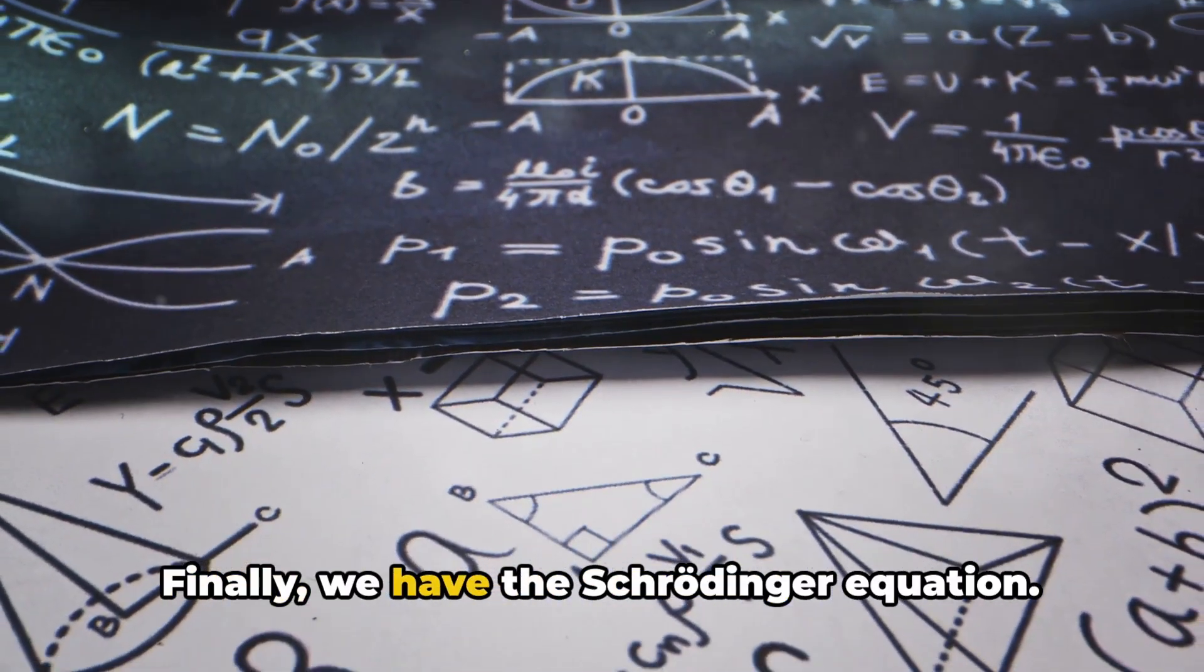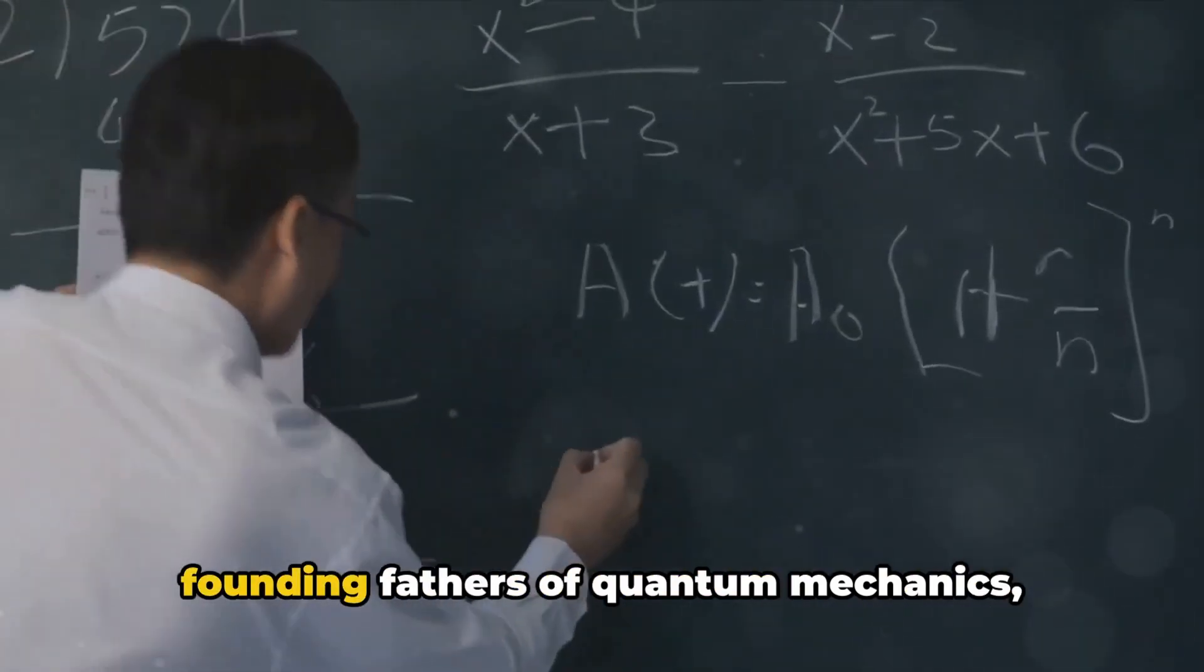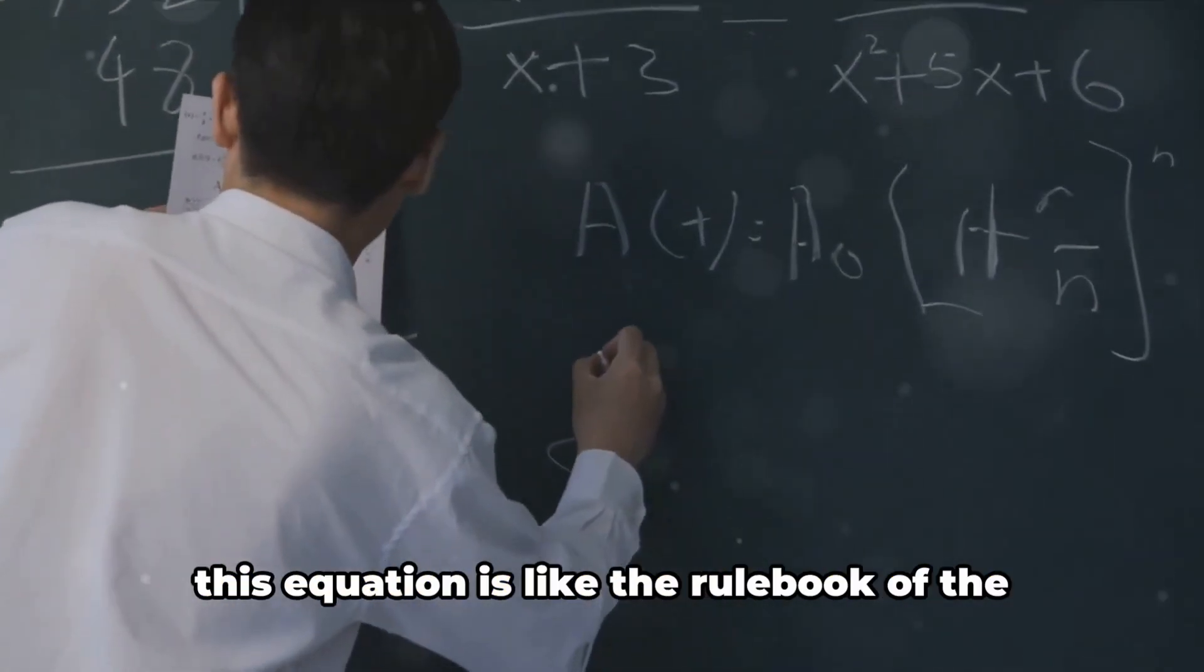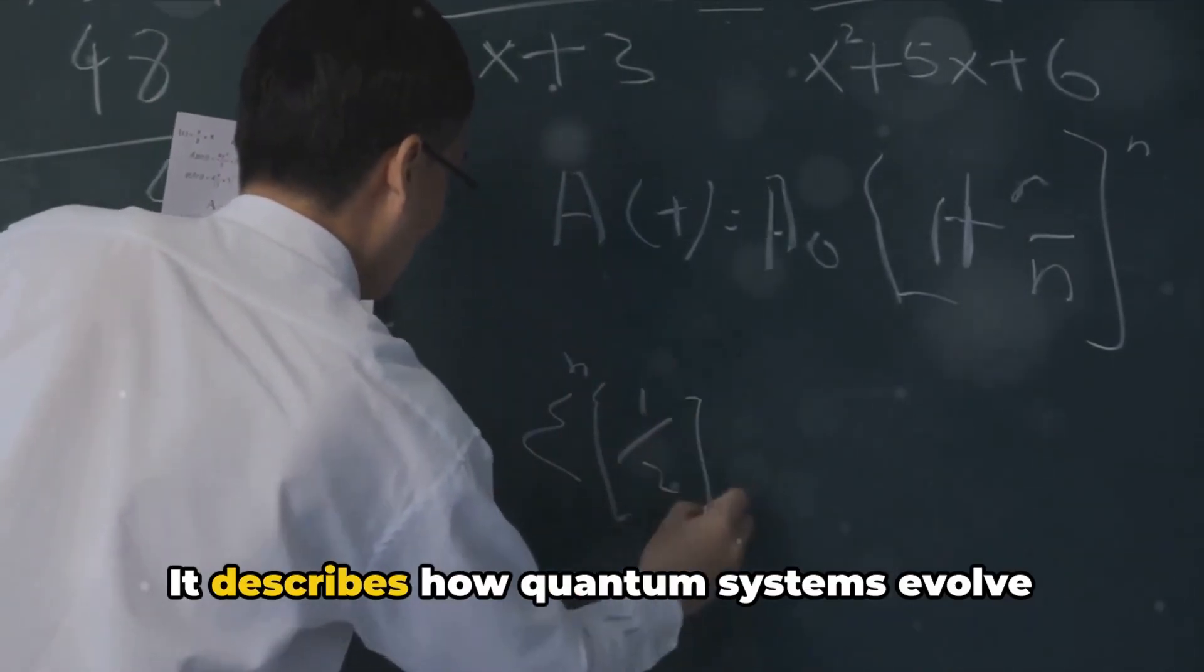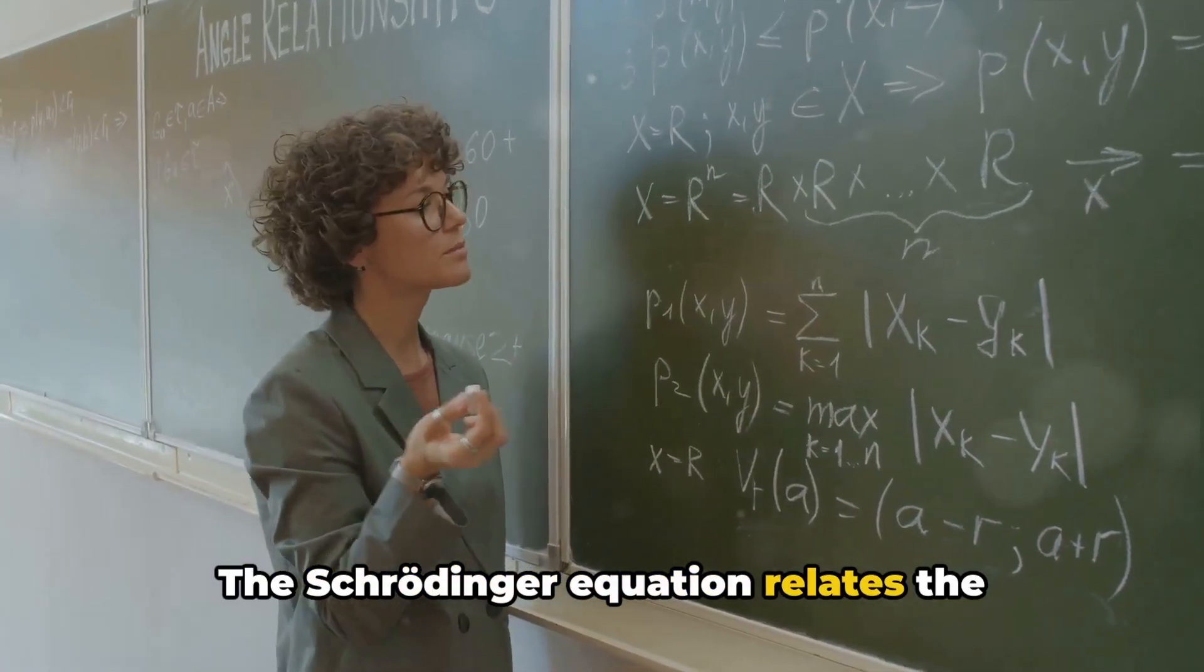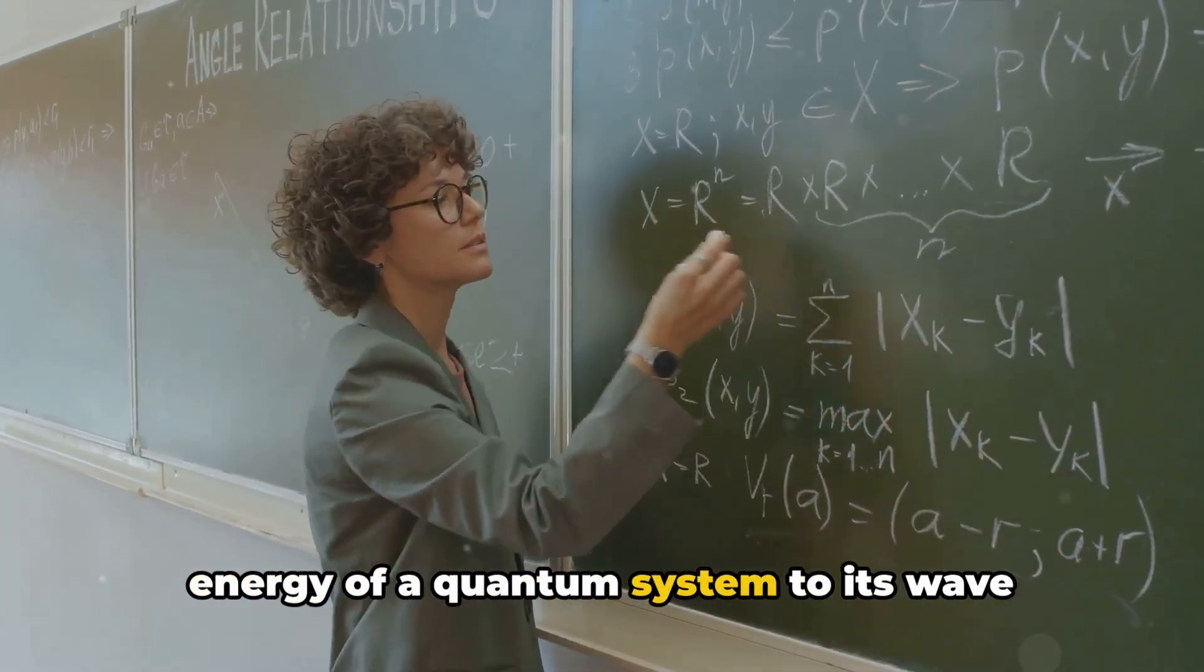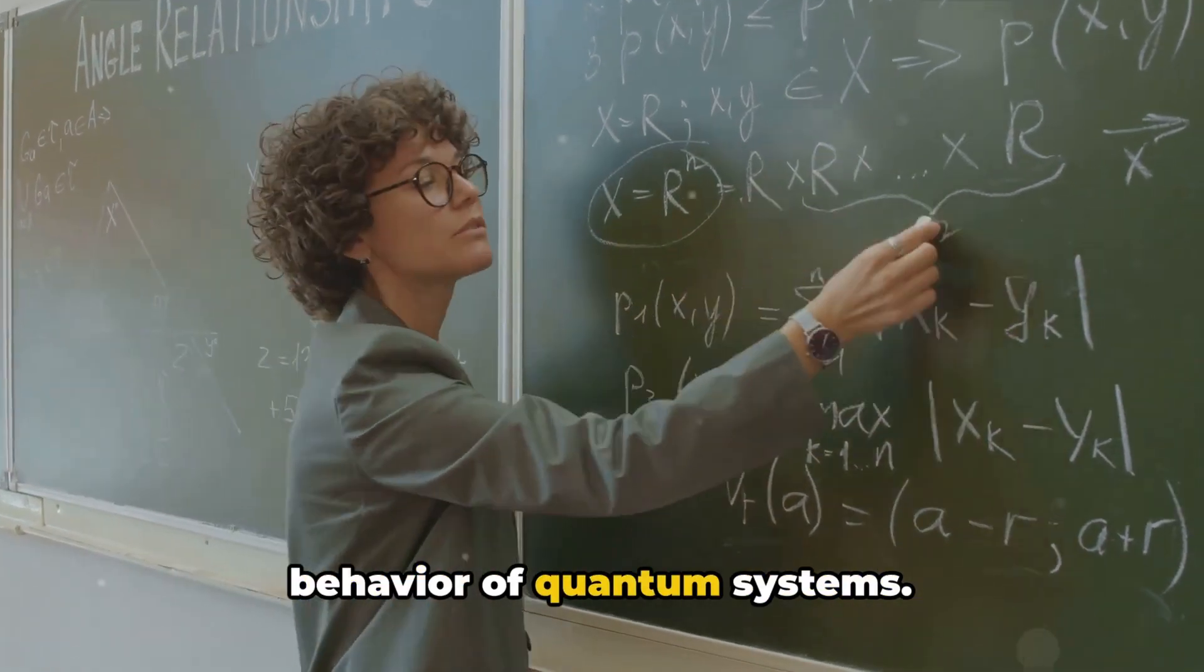Finally, we have the Schrödinger equation. Named after Erwin Schrödinger, one of the founding fathers of quantum mechanics, this equation is like the rule book of the quantum realm. It describes how quantum systems evolve over time. The Schrödinger equation relates the energy of a quantum system to its wave function and is crucial in predicting the behavior of quantum systems.